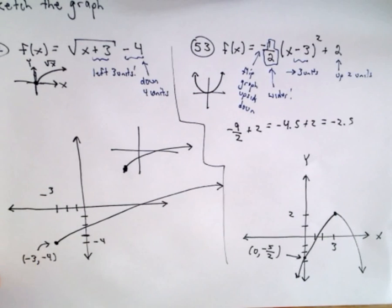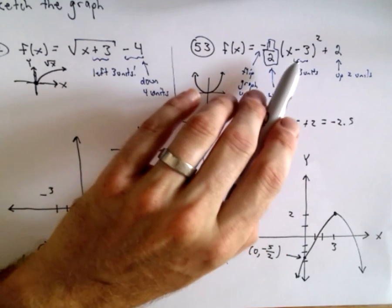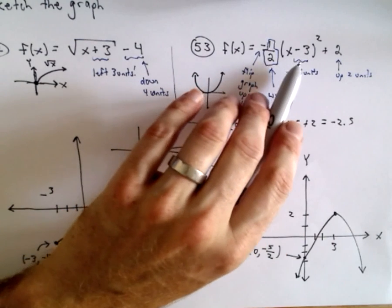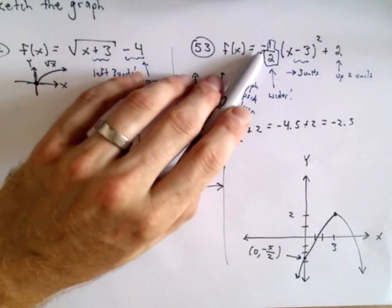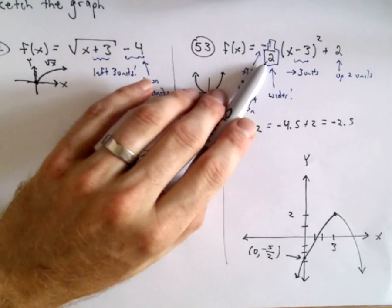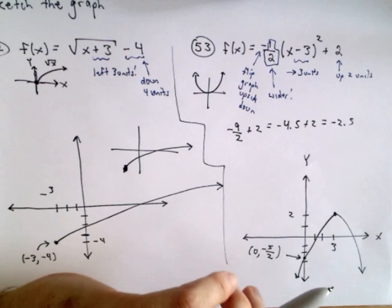And again, all I'm really interested in in these videos is just helping you remember how things move around, right? Shifts it to the right three units, up two units, the negative flips it, and then the one half in this case is going to make it wider.